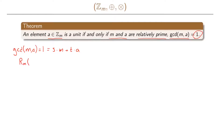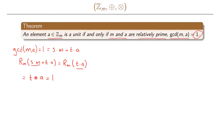Taking the remainder when we divide s times m plus t times a by m: the term s times m gives a remainder of 0, so only t times a persists. This gives t times a modulo m equals 1, meaning the inverse of a is equal to t.